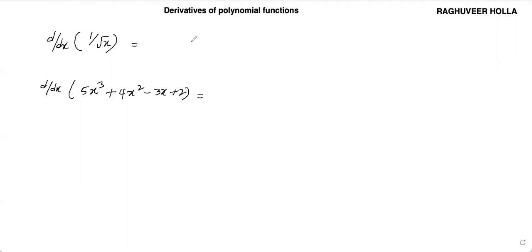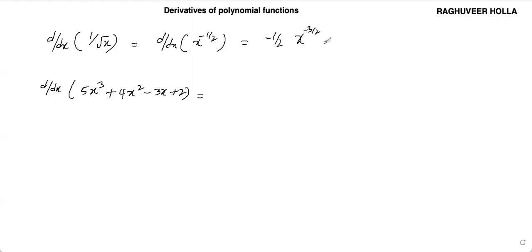Let us solve these derivatives. 1 by root x can be written as d by dx of x to the power of minus half. This will be minus half into x to the power of minus half minus 1, which is minus 3 by 2. Or you can write this as minus 1 by 2·x to the power of 3 by 2.